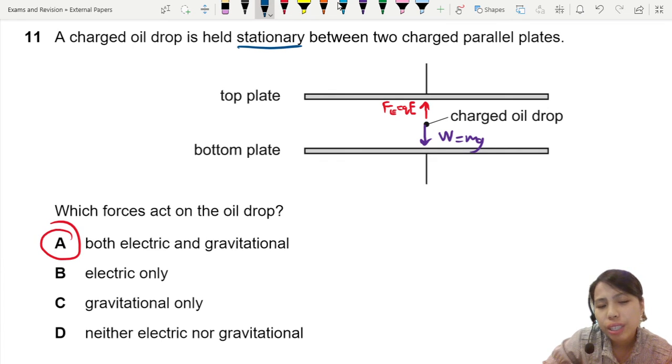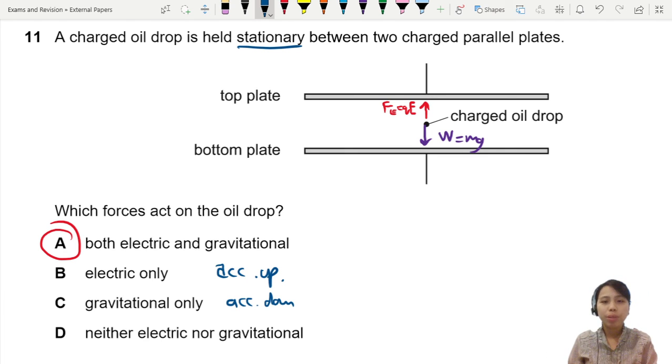If B, gravitational only, then the drop will accelerate down. If it's only electric, then you accelerate up. If it's neither electric nor gravitational, I don't know, it's possible, but on planet Earth we assume we are on planet Earth when we do this type of experiment.